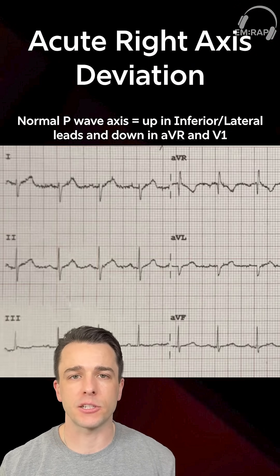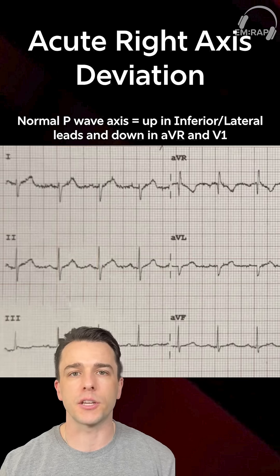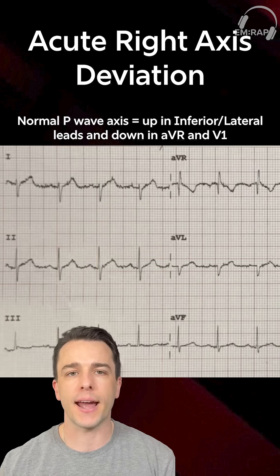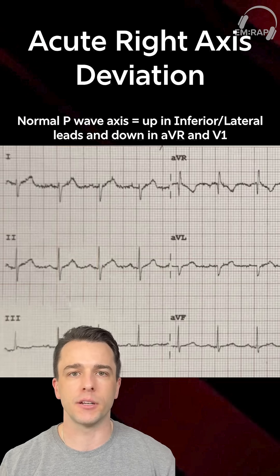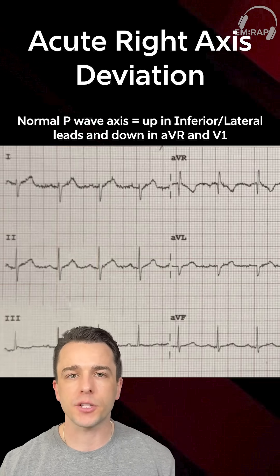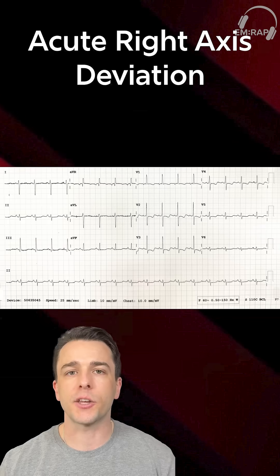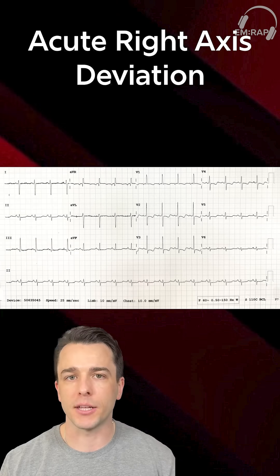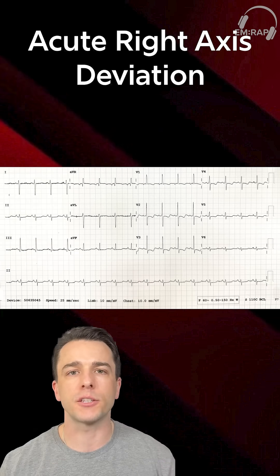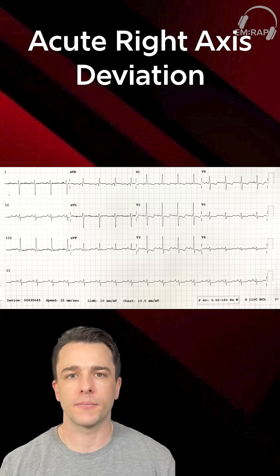If your P wave axis is normal, now we're thinking this is an acute right axis deviation. So what we should be thinking about first and foremost in these cases is an acute pulmonary embolism, or something causing acute right heart strain.